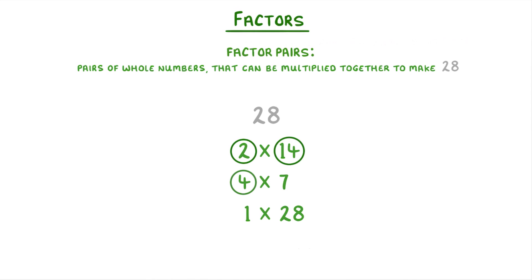And it's these six numbers that make up these factor pairs that would be the factors of 28, because they're all whole numbers that can be multiplied by another whole number to make 28.